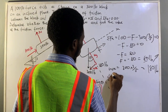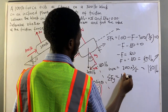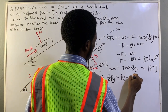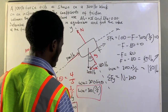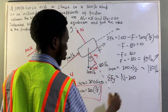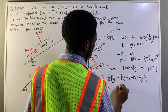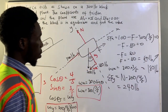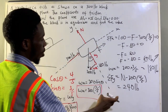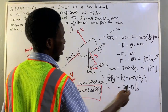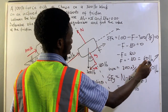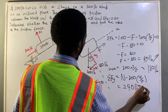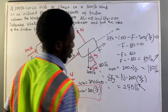Considering the forces in the y-axis direction: the normal force is positive and the y-component of the weight force is negative, so we have N minus 300 times cosine theta equals zero. That is N minus 300 times 4/5 equals zero, giving a normal force of 240 pounds. So for equilibrium, the normal force must be 240 pounds and the friction force must be 80 pounds acting in the positive x-direction.